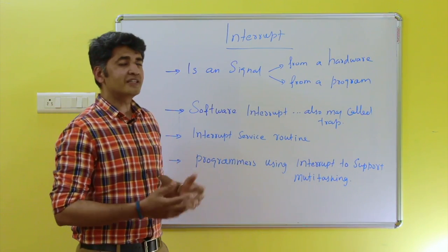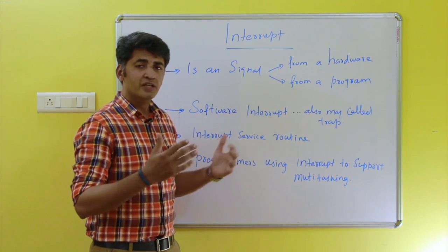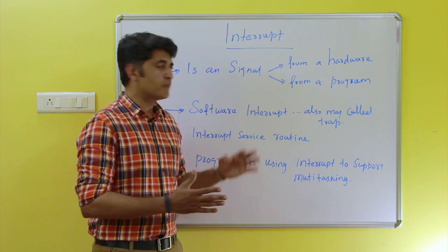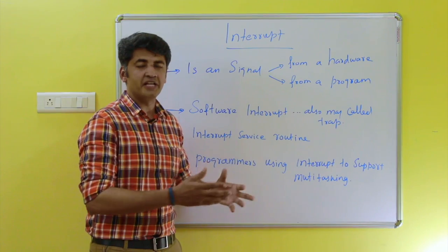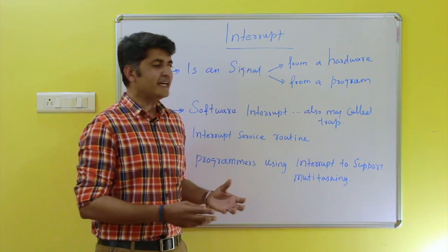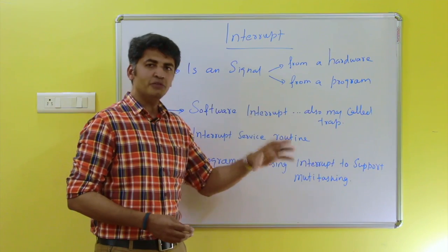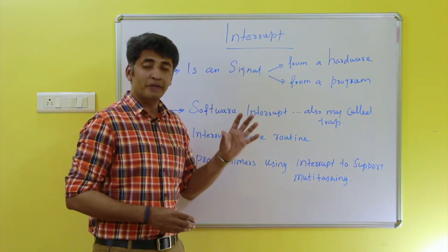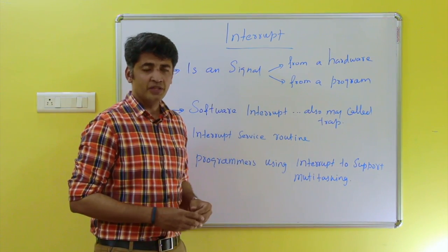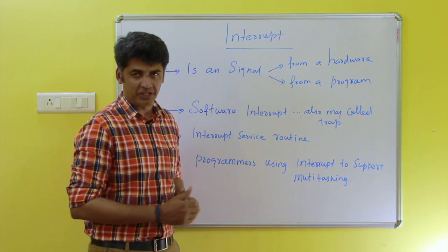How can a signal be generated? During the execution of a particular program, or during system execution, if any error occurs in the hardware — for example, if the keyboard fails or if the mouse fails — a signal will be generated from that particular hardware or device attached to the system and sent to the operating system. This is called an interrupt.